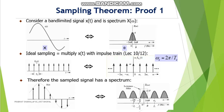In the frequency domain, the message signal has bandwidth B, and the bandwidth of the sampled signal corresponds to ω_s. The message signal spectrum is shifted by ω_s, so ω_s must be greater than twice B.